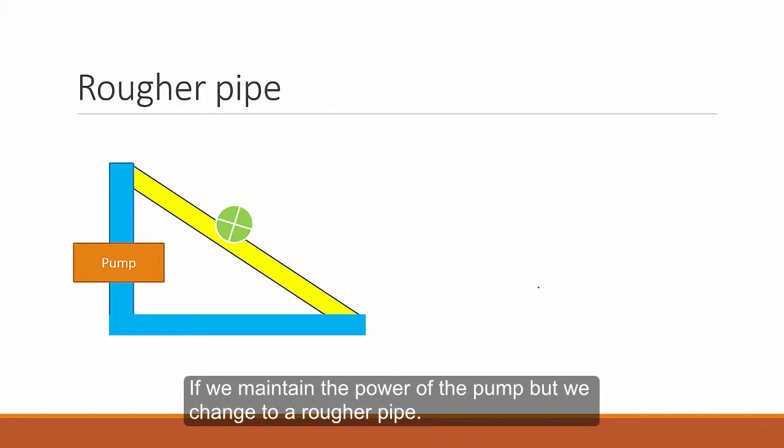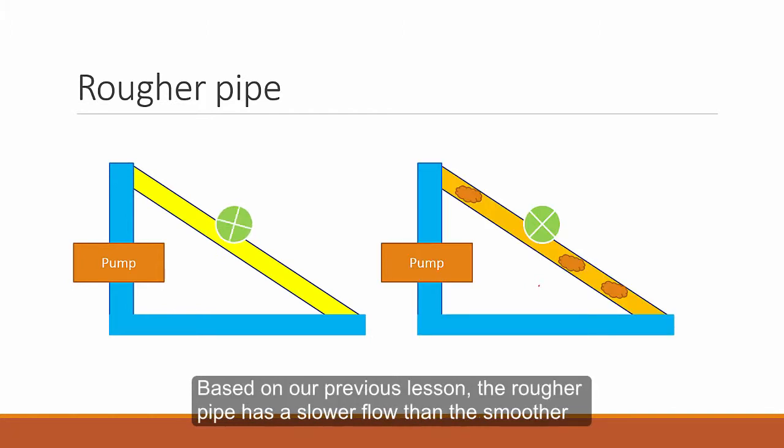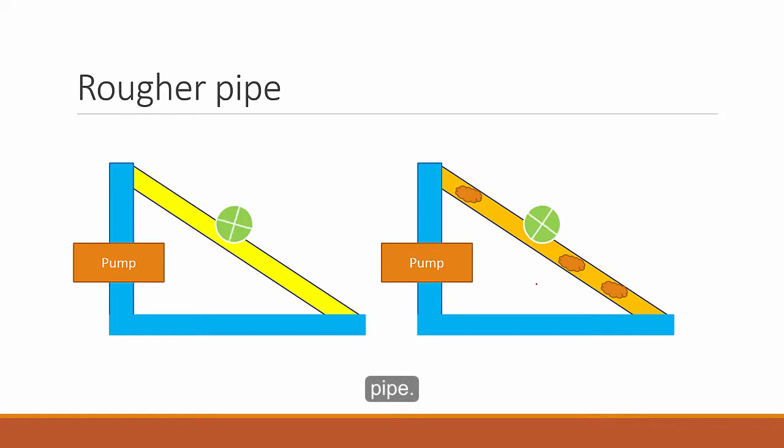If we maintain the power of the pump, but we change the pipe to a rougher one, based on a previous lesson, you know that the rougher pipe has a slower flow than the smoother pipe. So again, this is very similar. A higher resistance will lead to a smaller current flow.